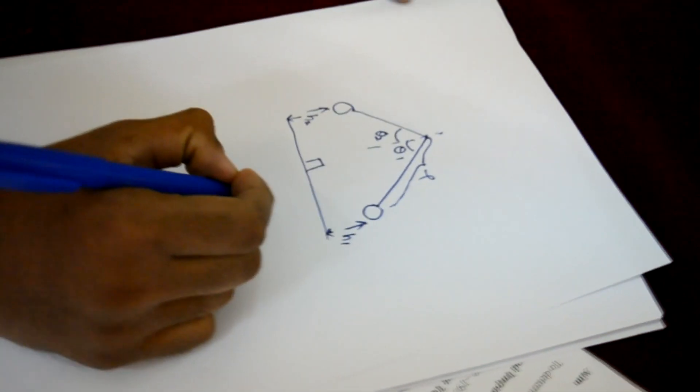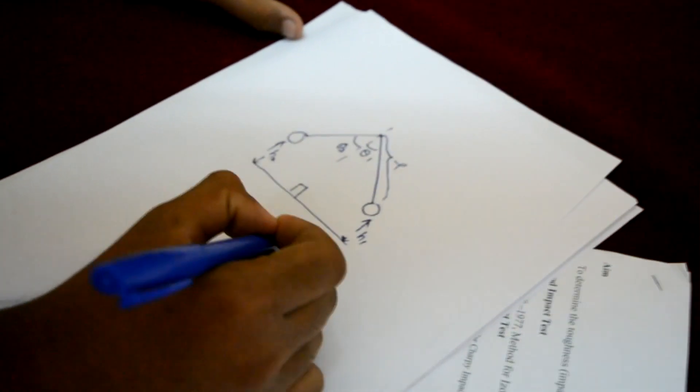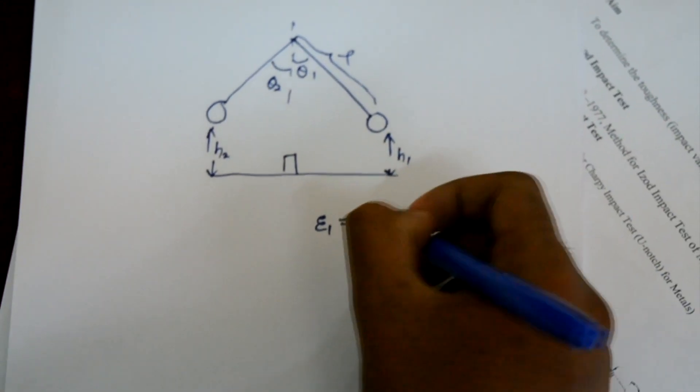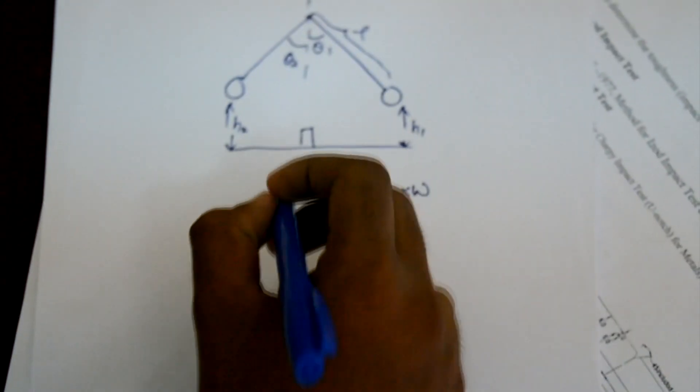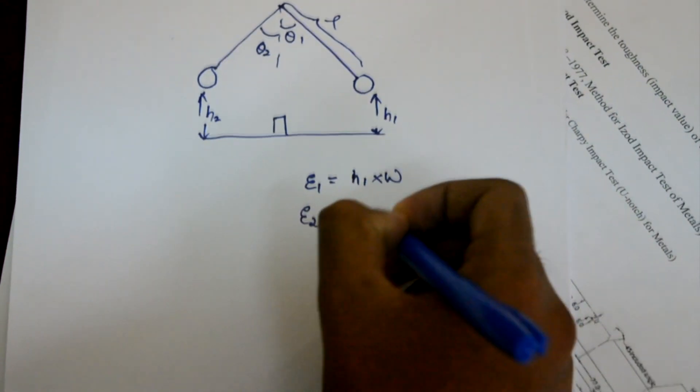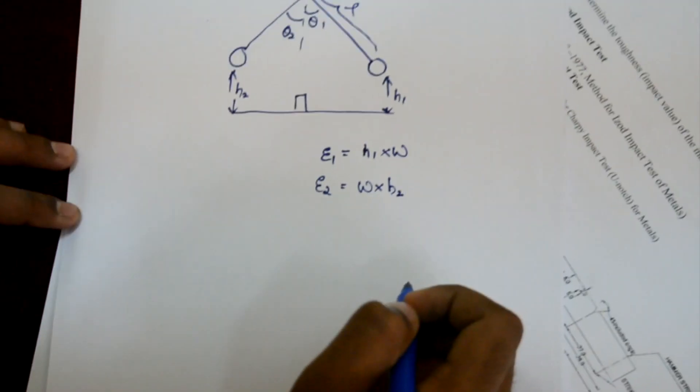Then the initial potential energy of the pendulum E1 is equal to WH1 and the final potential energy of the pendulum E2 is equal to WH2, where H2 is the final height.